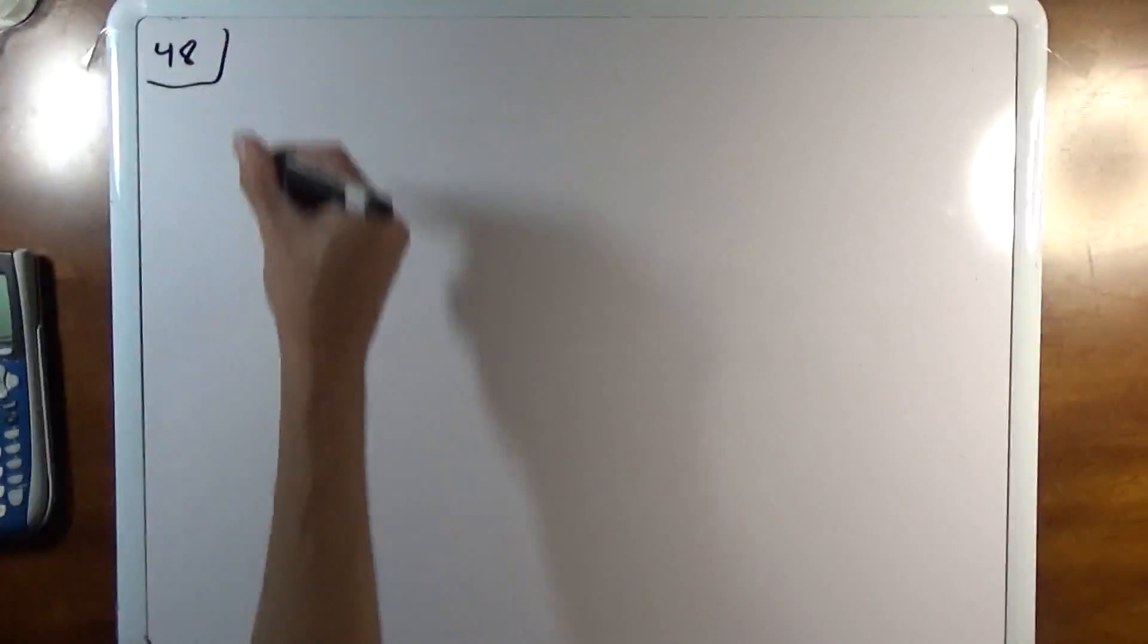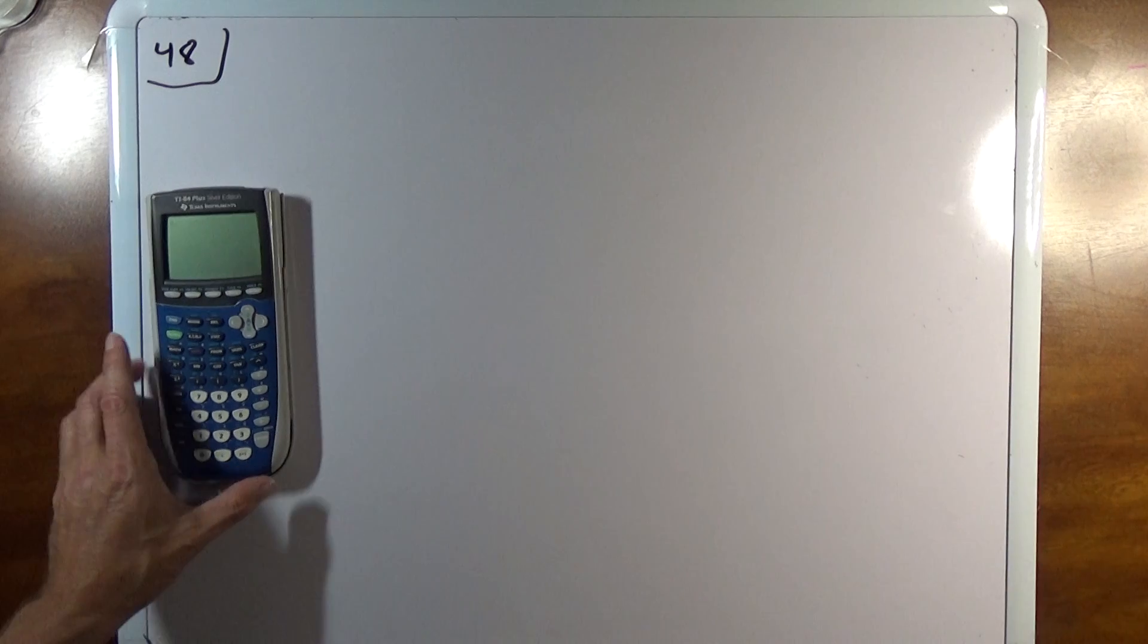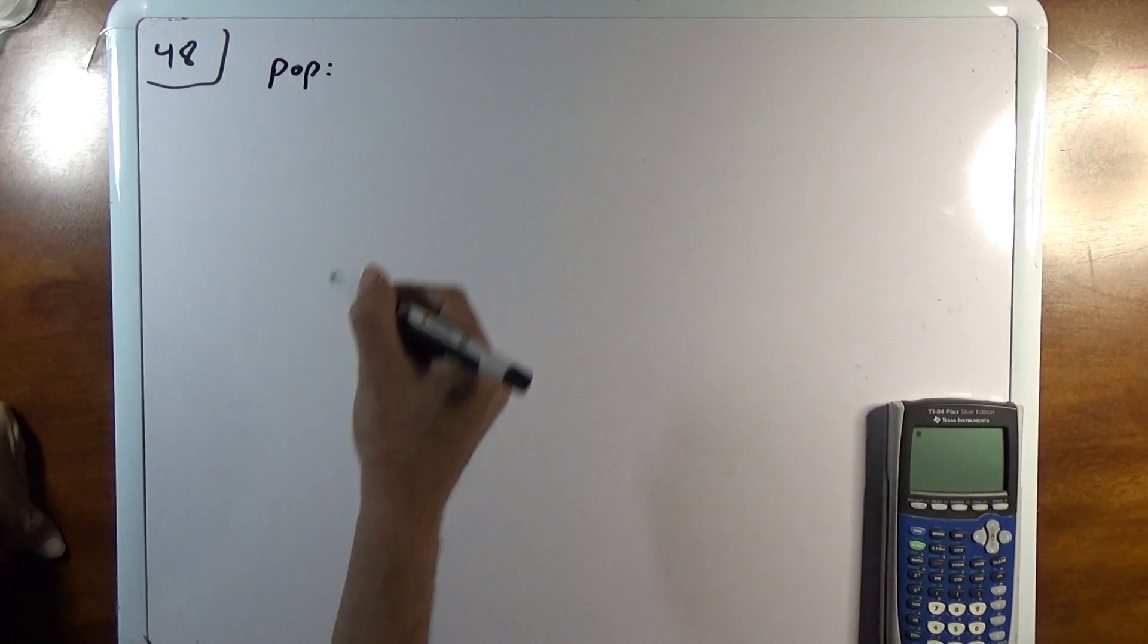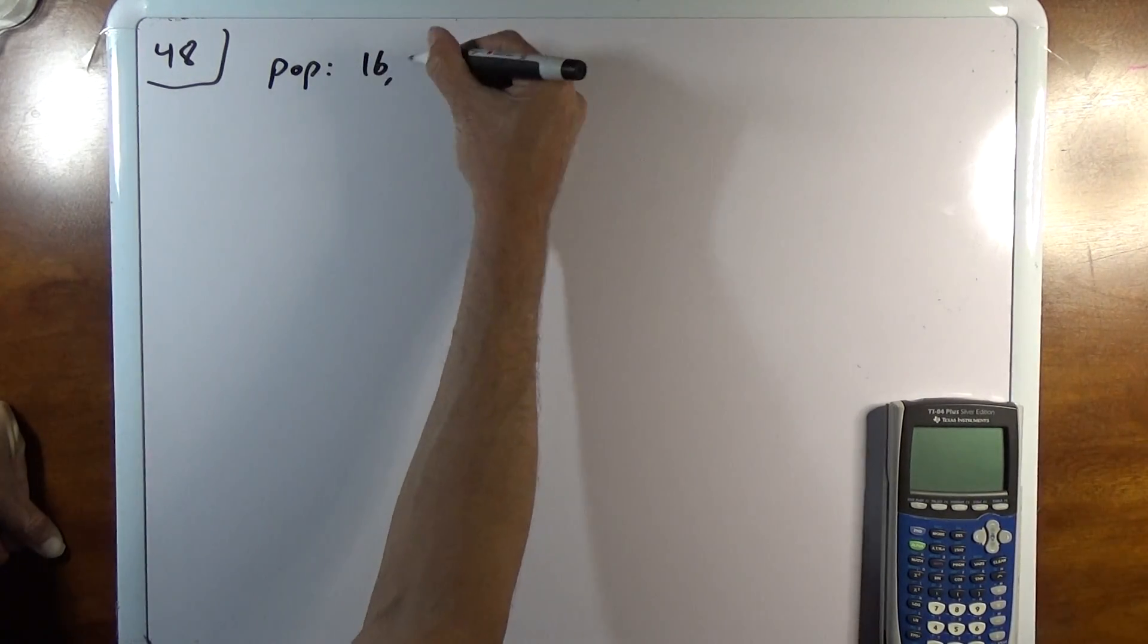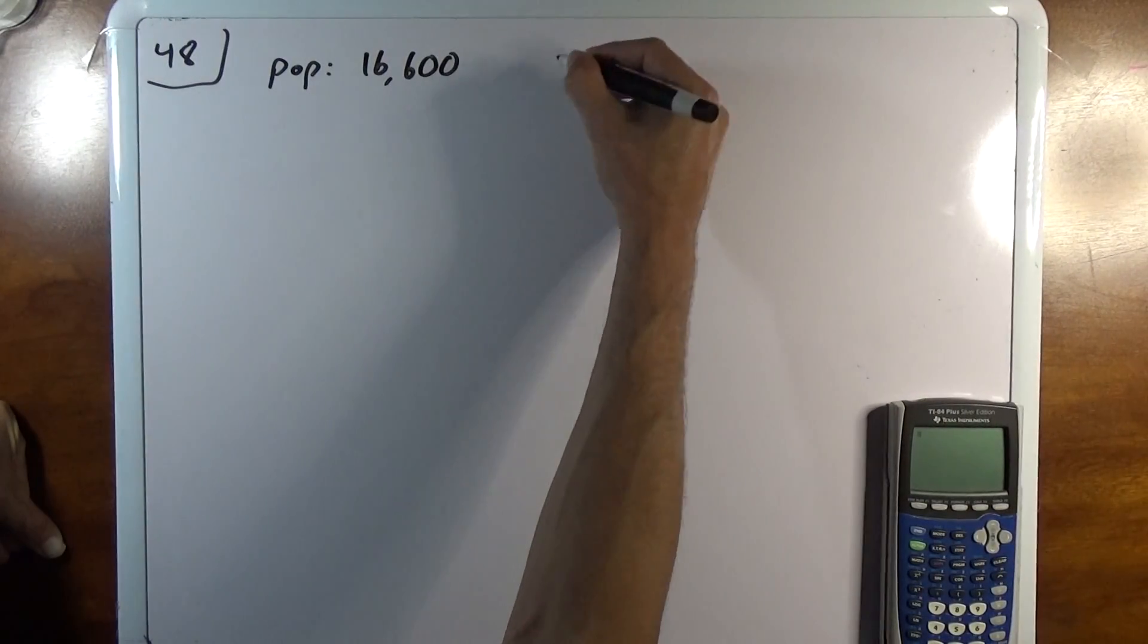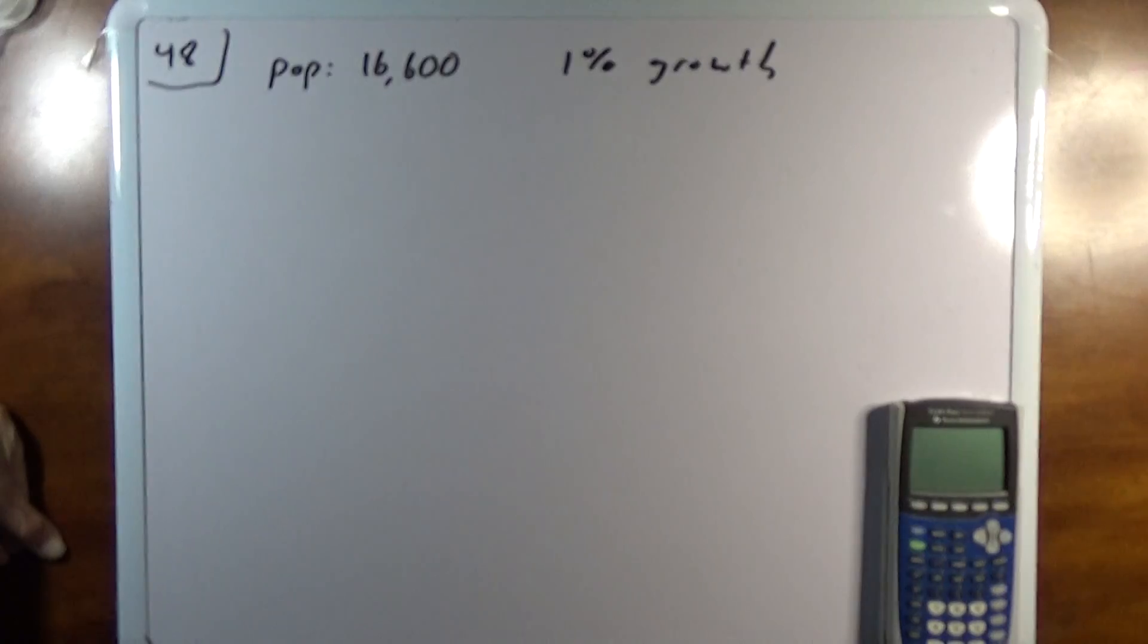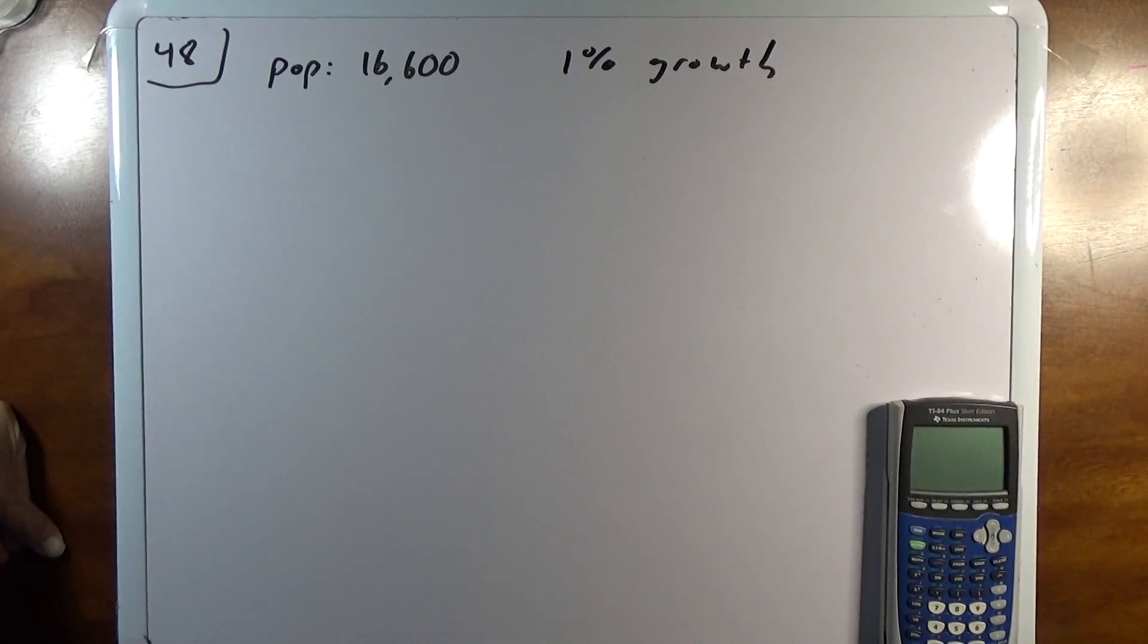48. So this is from the growth and decay part. 48 says suppose the population of the town is 16,600. It's growing 1% each year.